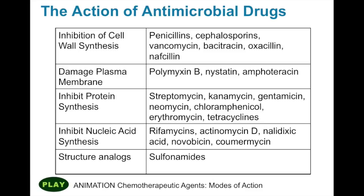Fourth category is inhibition of nucleic acid synthesis. If you prevent the cell from making RNA and DNA, then you're going to prevent it from replicating itself and making new cells. We have erythromycins, actinomycin D, nalidixic acid, novobiocin, and coumermycin in this category. And then we have structural analogs such as sulfonamides — sometimes called sulfa drugs. They basically act as competitive inhibitors in metabolic pathways and prevent essential compounds from being made for the cell.